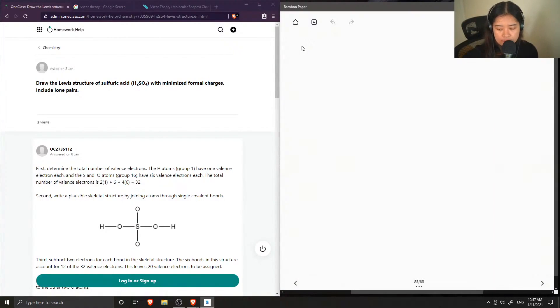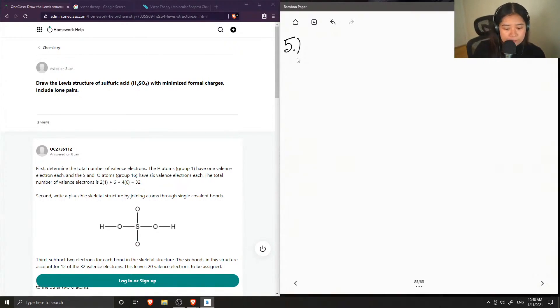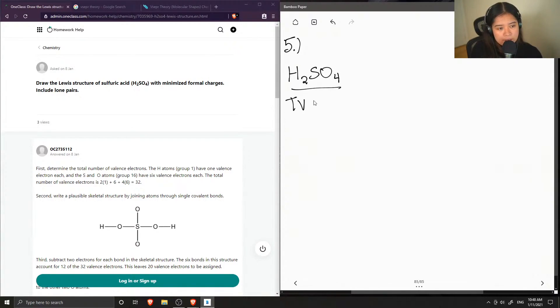Okay, so now on to question number five, which is to draw the Lewis structure of sulfuric acid with minimized formal charges, include lone pairs. Okay, so sulfuric acid is H2SO4. So now let's find the total number of valence electrons in this molecule.